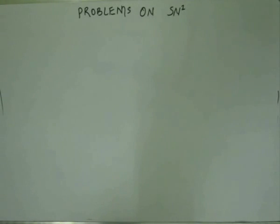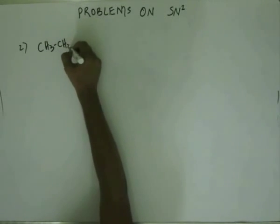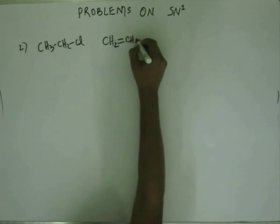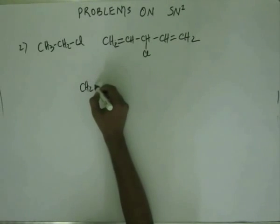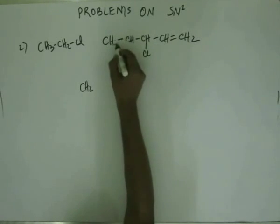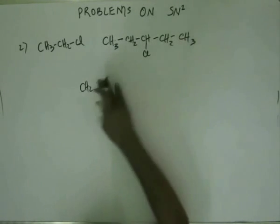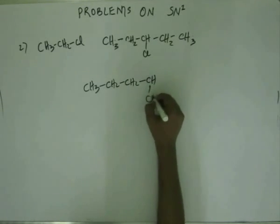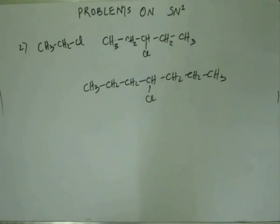Alright, now let's delve a little deeper into solving these problems on SN1 and SN2. Let's solve another problem. Let's keep it a little simple initially. The question is: you have been given 3 substrates and you have been asked the rate of reaction via SN1 mechanism.